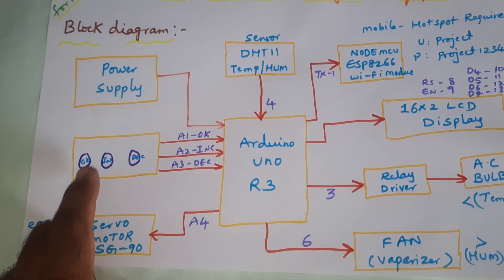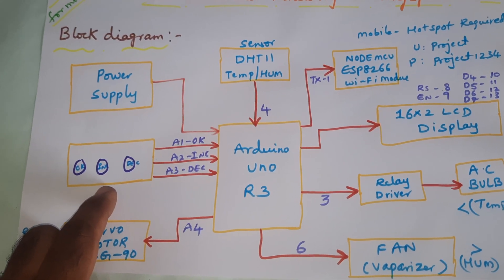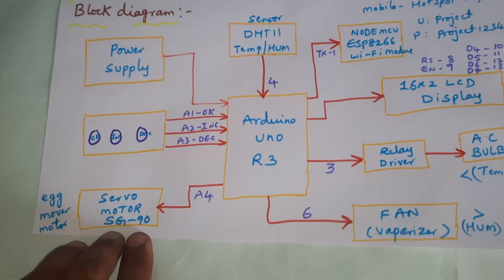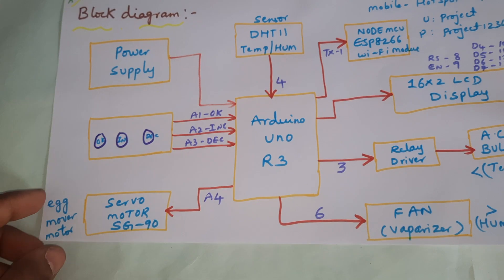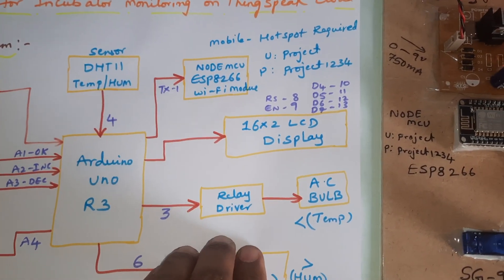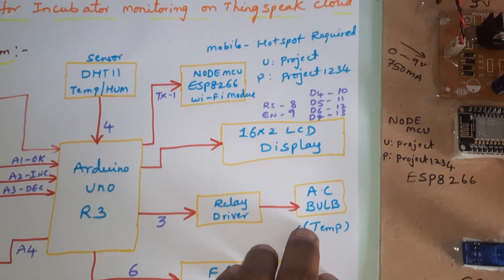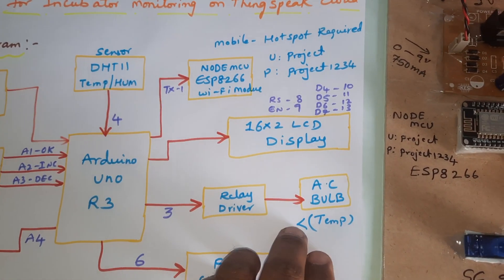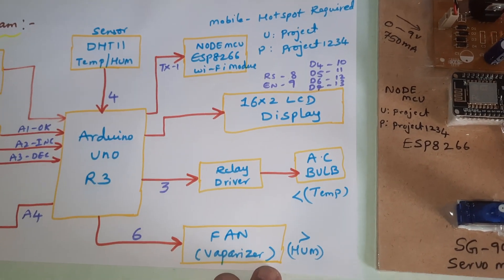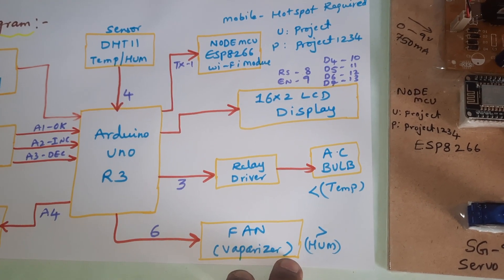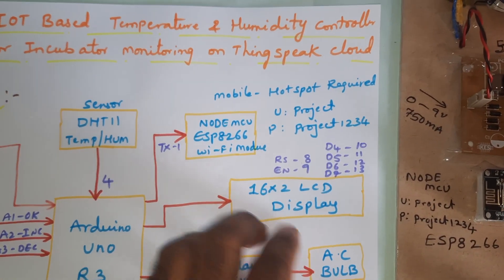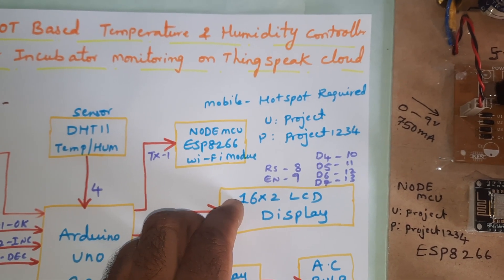There are three switch buttons to adjust the temperature and humidity: increment button, decrement button, and an OK button. We also use an SG90 servo motor for egg rotation, a vaporizer fan, a relay, and an AC bulb. If temperature is below the set point, the bulb turns on; above set point, the bulb turns off. Below humidity, fan off; above humidity, fan on. A 16x2 LCD display is connected via RS, Enable, D4, D5, D6, D7.